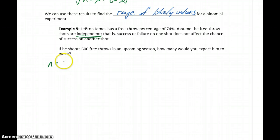In this case, our number of trials is 600, our probability of success is 0.74, and our probability of failure is 1 minus that, so 0.26.